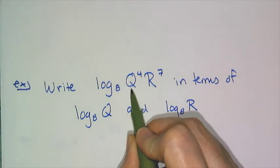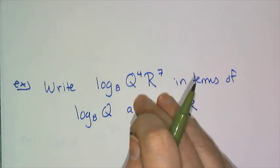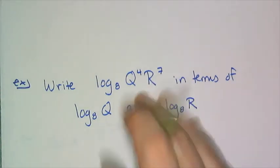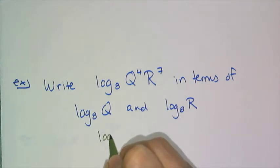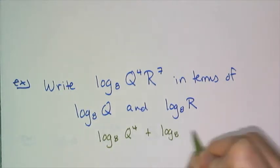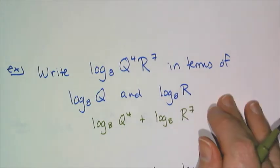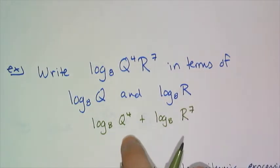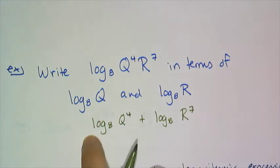So I see that q to the fourth and r to the seventh are multiplied together. So I can use the product rule and write log base 8 of q to the fourth plus log base 8 of r to the seventh. I have one more log law that says if I'm raising it to a power it's the same thing as multiplication.